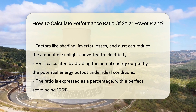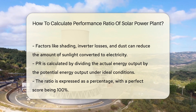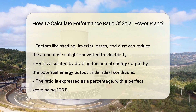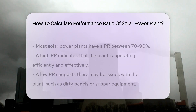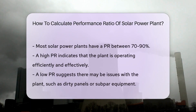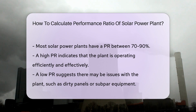So how do we crunch the numbers? The PR is the ratio of the actual energy output to the energy that could have been produced under ideal conditions. It accounts for losses and gives us a percentage. A 100% PR? Perfect score. But that's as rare as a unicorn.